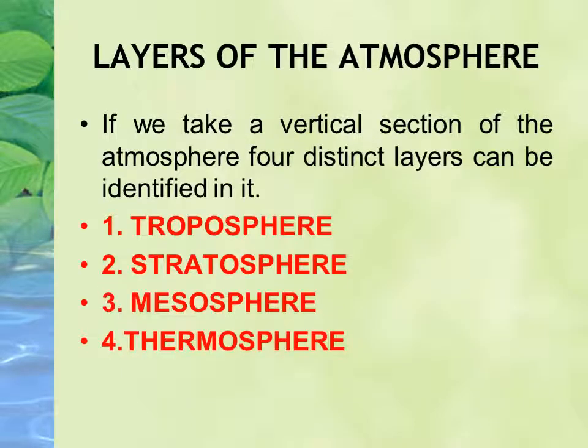If we go up above planet Earth and look at which layers are present, starting from the bottom — that is from the surface of the Earth going upward — there are four layers: troposphere, stratosphere, mesosphere, and thermosphere. These are the four layers of the atmosphere in a vertical section.